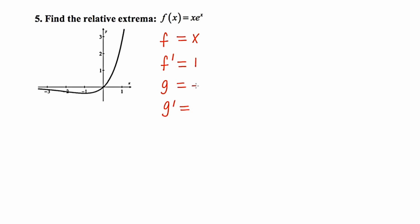Our second function is e to the x, and its derivative is going to be e to the x. Now using the product rule, and notating everything properly, f prime of x will be the first function x, times the derivative of the second function, plus the second function, times the derivative of the first function.